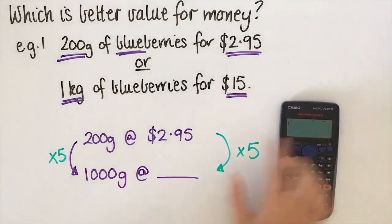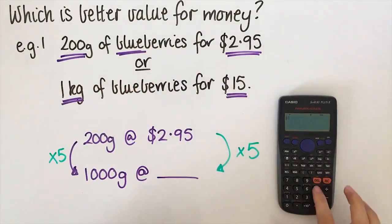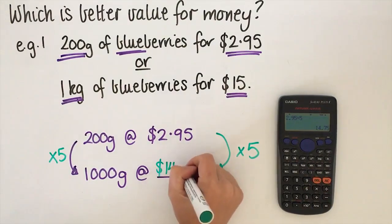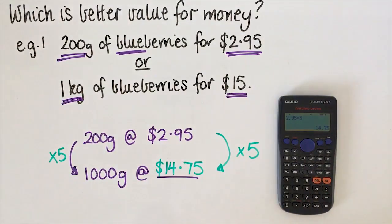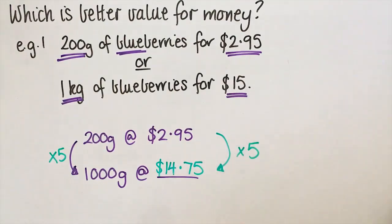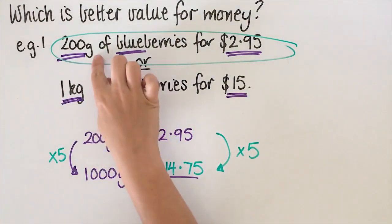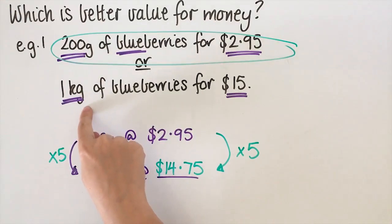Then we'll know if I bought five lots of 200 grams, how much would that cost? So I'm going to do $2.95 times five, and that's going to give me $14.75, which is cheaper than this. So I'm better off buying five packets of this than buying one of these.